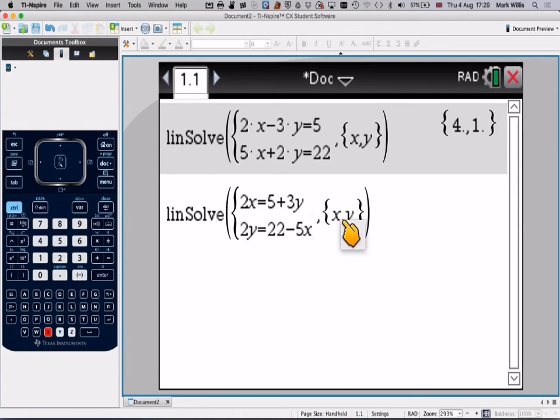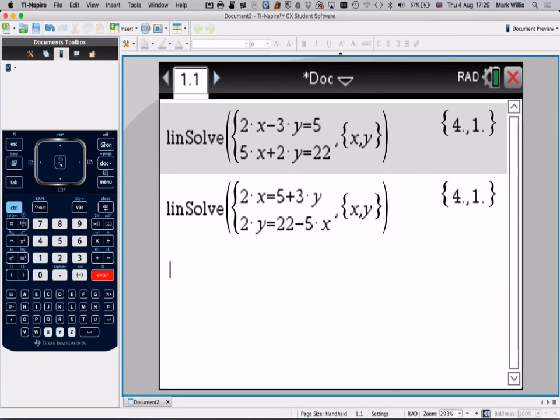This bit here just tells us that we're solving them for x and y, and if we've done it correctly, we'll get x is 4, y is 1. So you could have just entered them in the original format, just that this is the more general way they're written down. The dots mean multiply on this calculator.